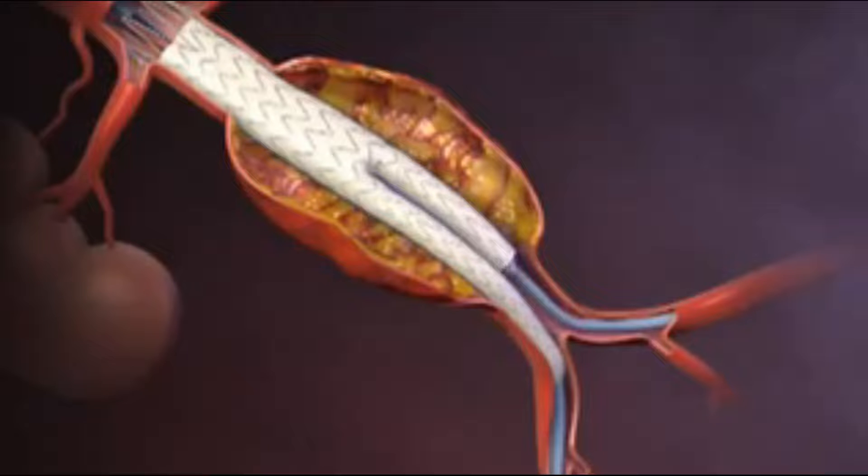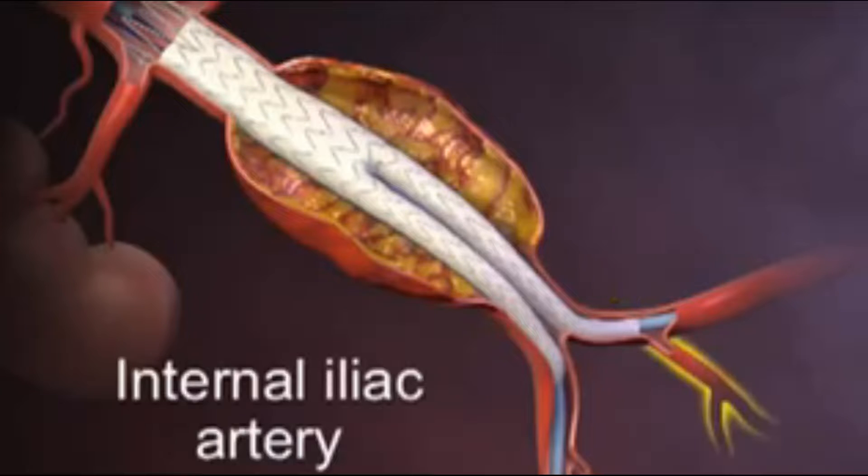with overlap sufficient to prevent leakage around the junction of the main body of the device and the proximal end of the limb, and so that the distal end of the contralateral limb is located superiorly to the internal iliac artery.